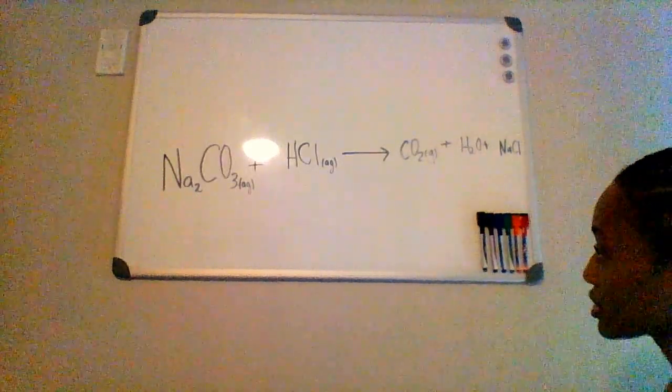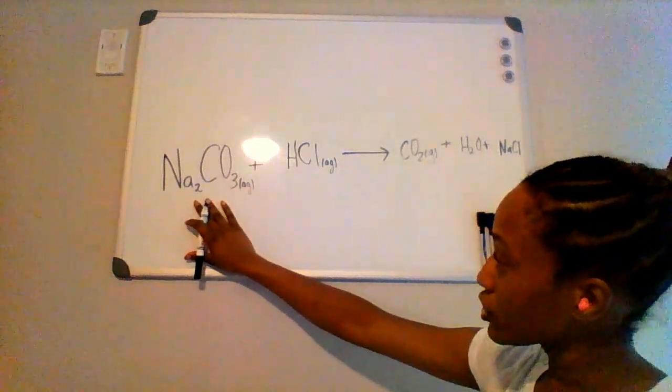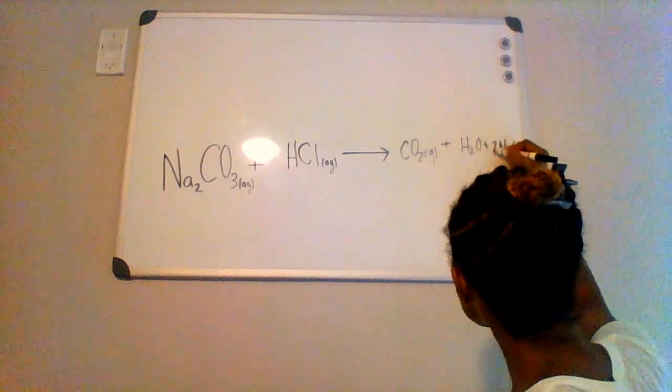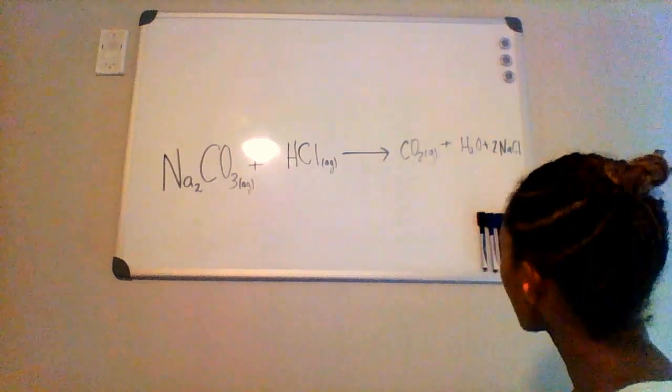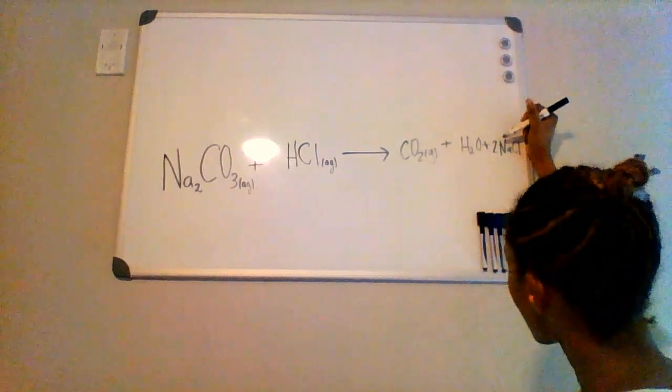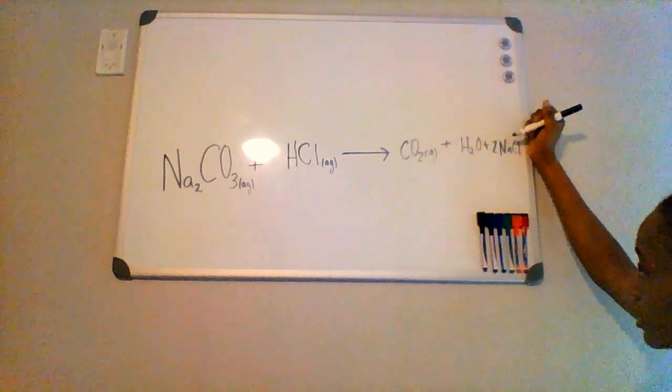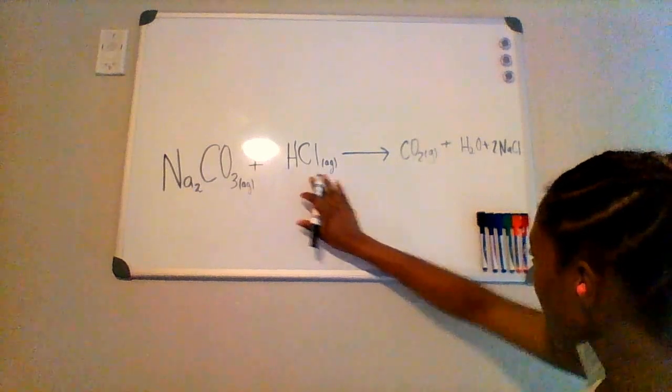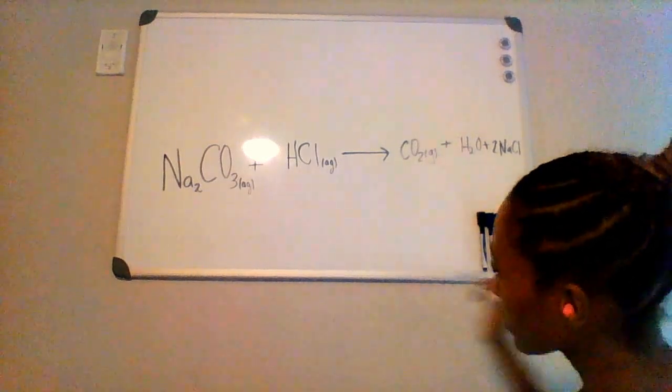Now what we have to do is balance. So there's two sodiums on the product side, therefore I have to have two on the reactant side. Now by doubling the amount of NaCl, I also have to double the amount of chlorines. I have one chlorine on the reactant side and two on the product side.